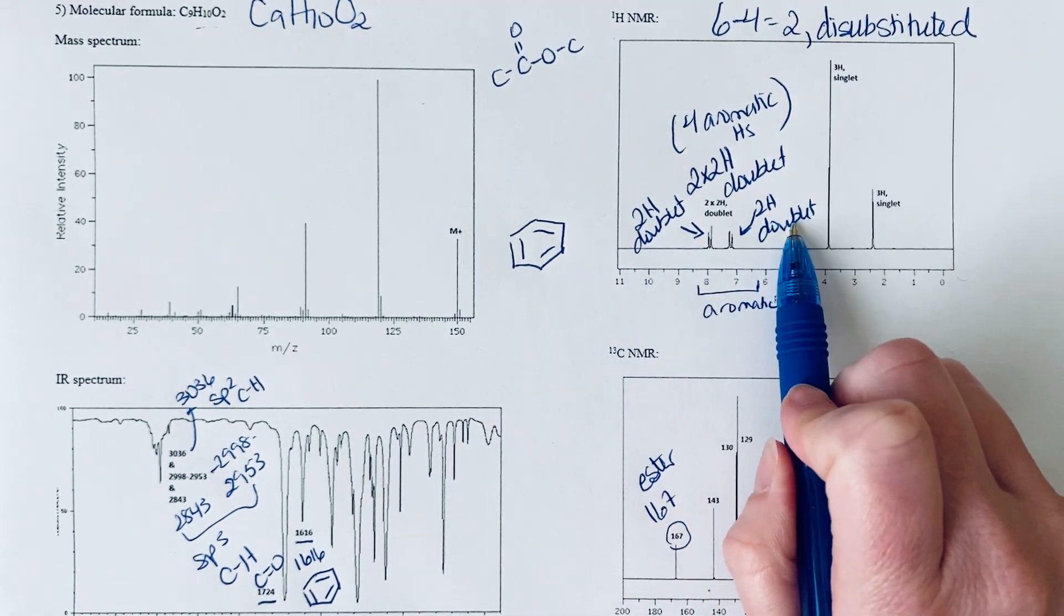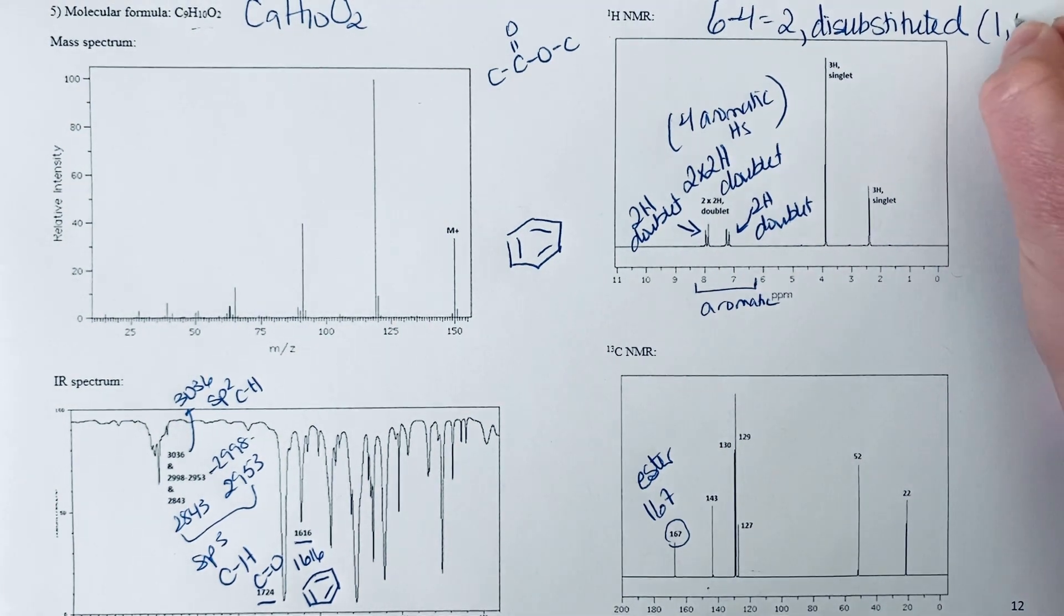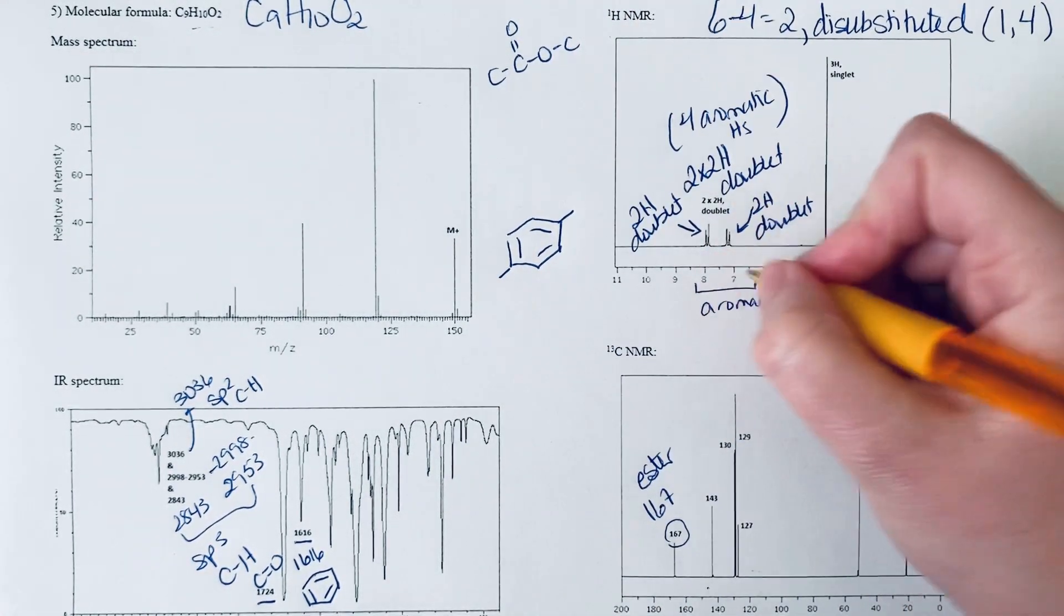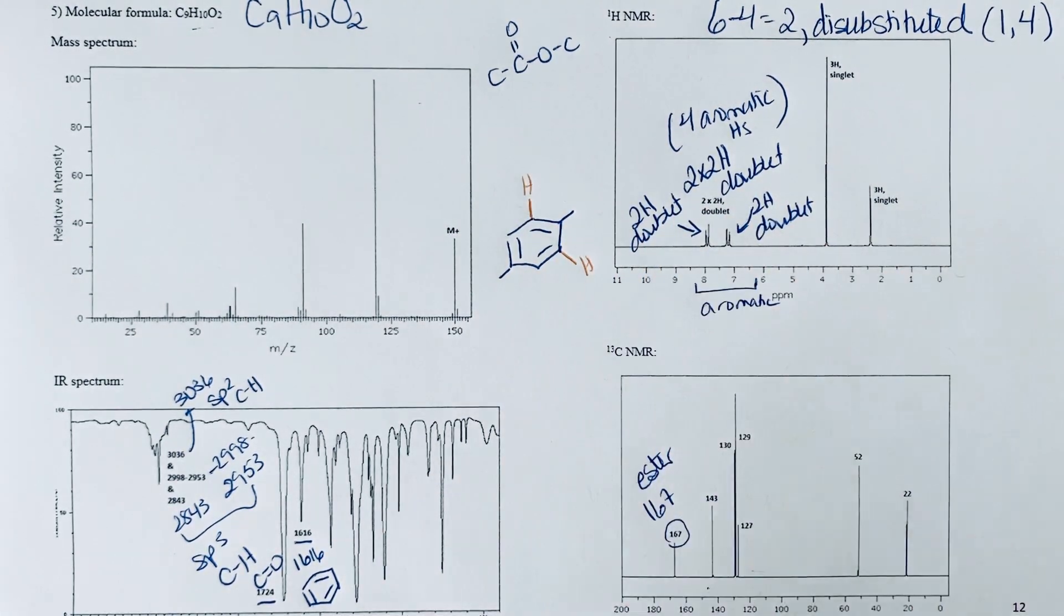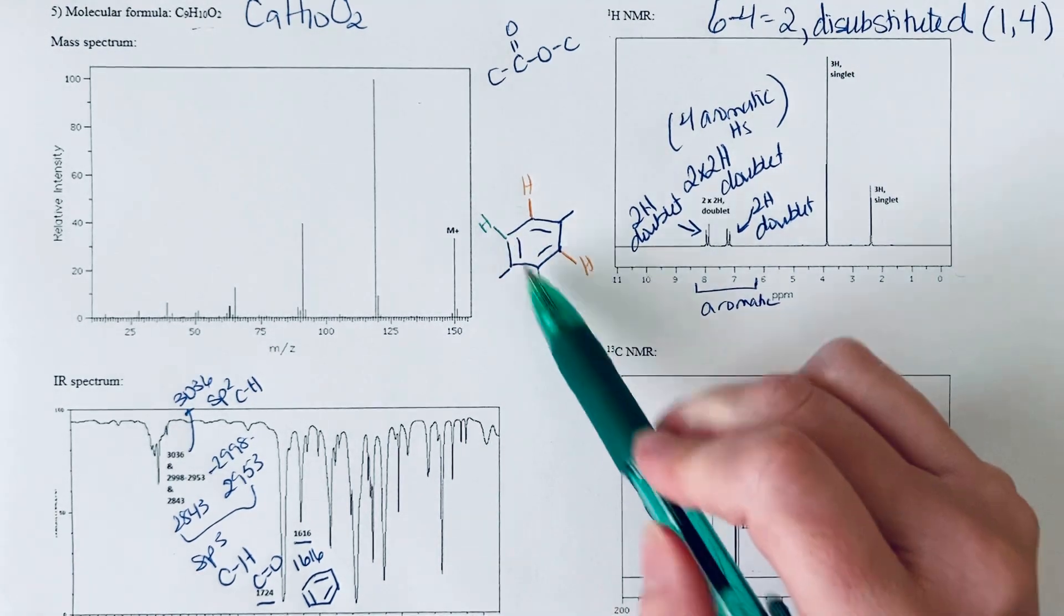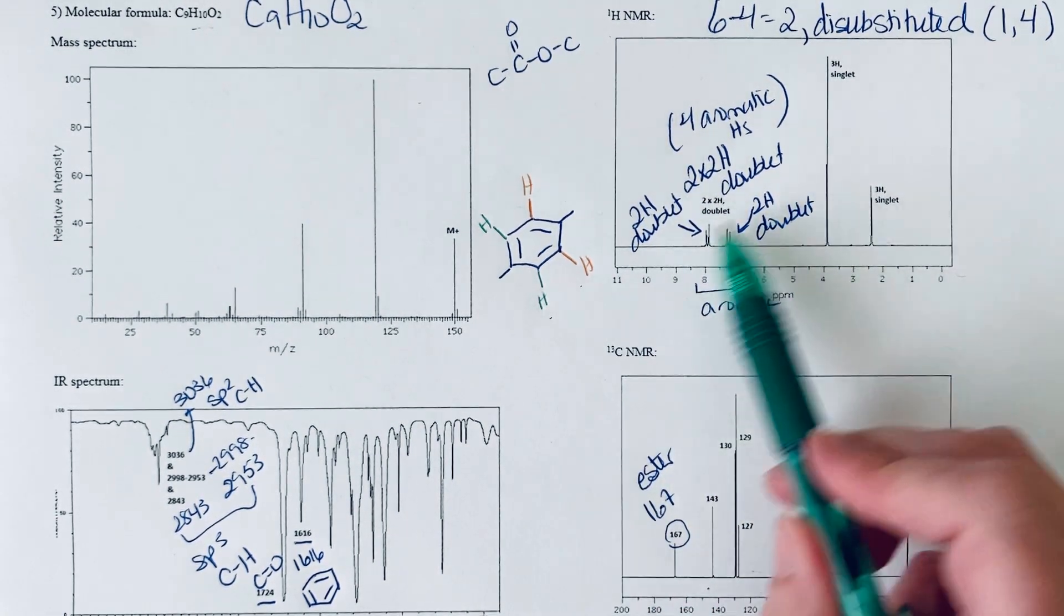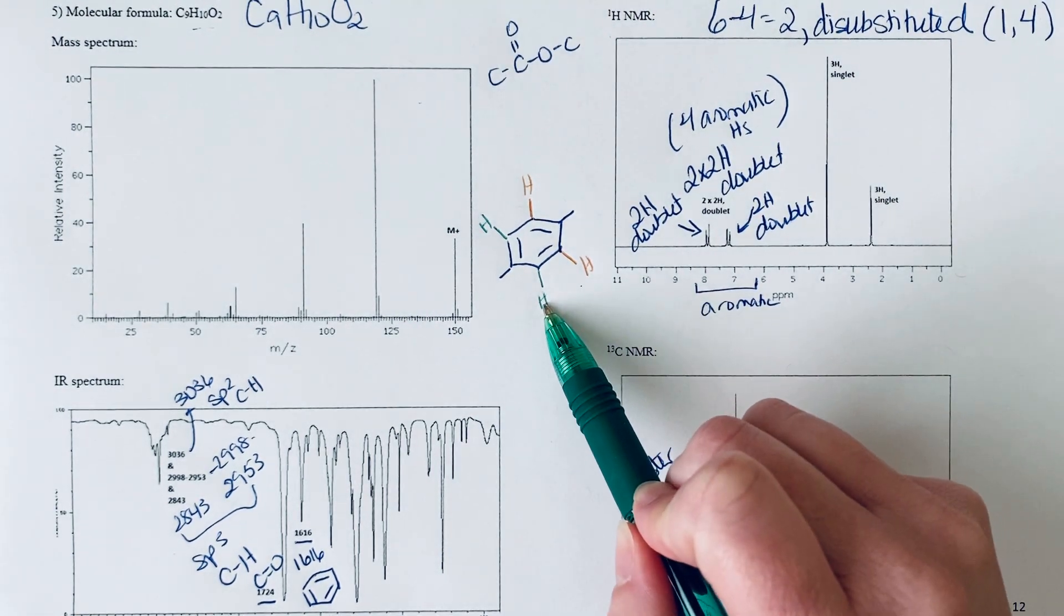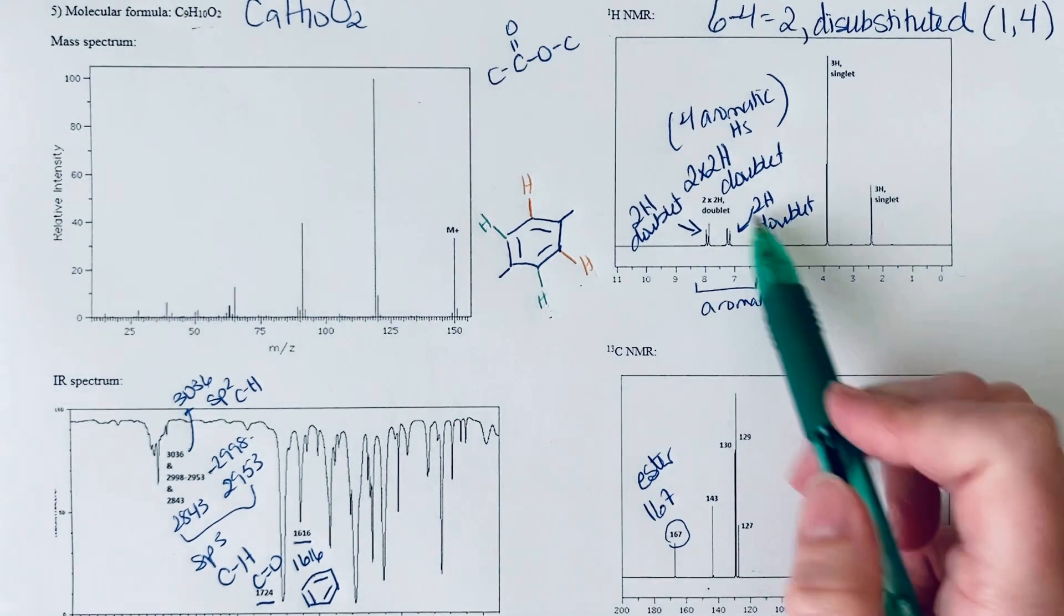This pattern—this two hydrogen doublet, two hydrogen doublet, very symmetrical pattern—tells us that this is a 1,4-disubstituted benzene. Whatever two hydrogens are next to this group are going to be the same as each other, so two hydrogens. Then the other two hydrogens, because we've got that plane of symmetry down the center of the molecule regardless of what these two groups are, are also equivalent. The doublet of doublets splitting pattern is very indicative of the fact that they are across from each other, that you have a 1,4-disubstituted ring.